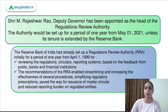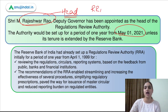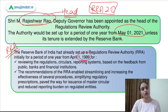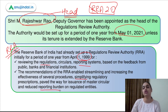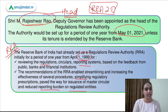This authority has been appointed with Mr. Rajeshwar Rao, the Deputy Governor, as its head. He is going to head this authority, and as mentioned, it has been framed for a time period of one year. Now, why is it called RRA 2.0 and not just RRA? The reason is that we already had one such authority set up in the year 1999. The objectives of that authority were also similar — to review the regulations, the reporting systems, and to simplify them to reduce the reporting burden and make things more effective. Because there was already one authority set up earlier, we call this one RRA 2.0 as it has been set up for the second time.